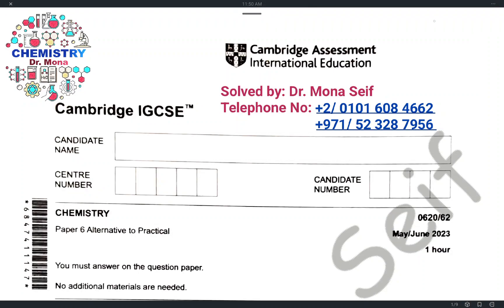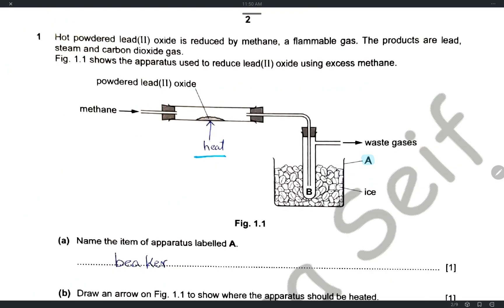Assalamu alaikum warahmatullah. Today we're going to solve Cambridge exam May/June 2023 Paper 62. Question one: hot powdered lead oxide is reduced by methane. Methane is a flammable gas. The products of this reduction are lead metal, steam, and carbon dioxide.